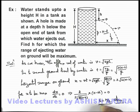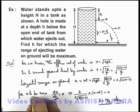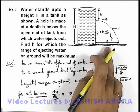And h is equal to capital H by 2. This is for dx by dh should be zero, or for x to be maximum in this situation.